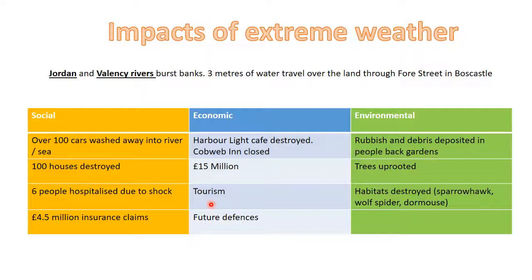Six people were hospitalised due to shock. The way to explain that is it reduces other patients' leisure time: if six extra people turn up at hospital they are treated as a priority due to shock, increasing waiting times for other people using the hospital for other reasons. Those people then have less leisure time and less access to opportunities — for example, spending time with family — resulting in a lower quality of life.